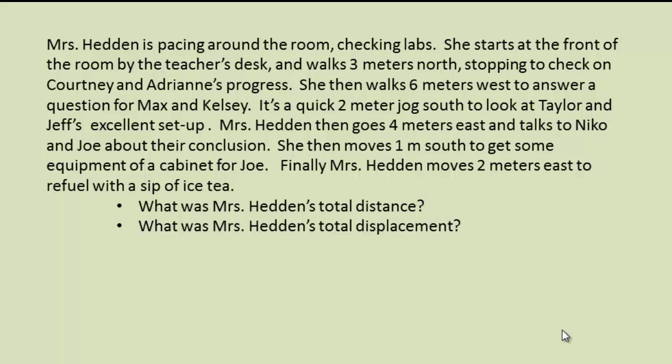Second example. Mrs. Hedden is pacing around the room, checking labs. She starts out at the front of the room by the teacher's desk and walks 3 meters north, stopping to check on Courtney and Adrian's progress. She then walks 6 meters west to answer a question for Max and Kelsey. It was a quick 2 meter jog south to look at Taylor and Jeff's excellent setup. Mrs. Hedden then moves 4 meters east and talks to Nico and Joe about their conclusion. She then moves 1 meter south to get some equipment out of the cabinet for Joe. Finally, Mrs. Hedden moves 2 meters east to refuel with a sip of iced tea.